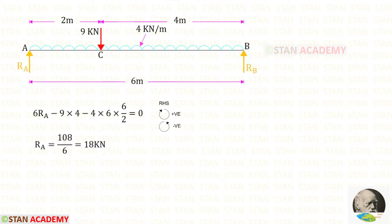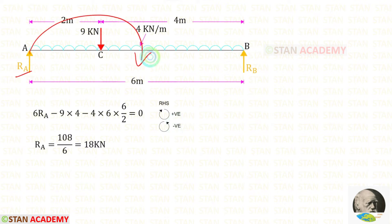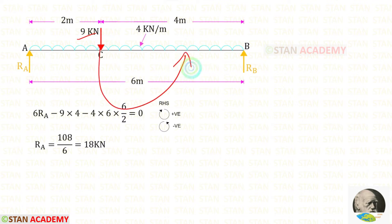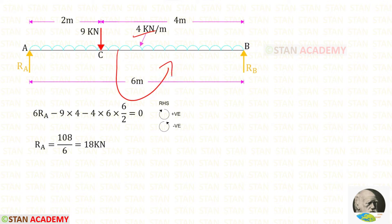First let us find the reaction Ra. For that I am going to take moments about B. Clockwise will be positive and anti-clockwise will be negative. Ra is acting in the clockwise direction, so it is positive and the distance is 6, giving 6·Ra. The load of 9 kilo newton is acting anti-clockwise, so it is negative, and the distance is 4. The UDL of 4 kN/m is also acting anti-clockwise; for the UDL we multiply with the distance and distance divided by 2. Finally, for Ra we get 18 kilo newton.